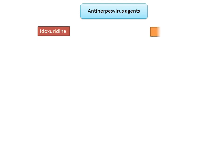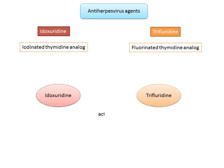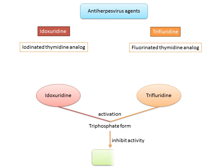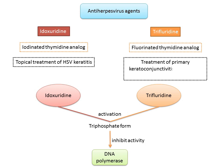Two other drugs are idoxuridine and trifluridine, both thymidine analogs — idoxuridine is the iodinated form and trifluridine is the fluorinated form. Upon activation, both are converted to their triphosphate form, which inhibits viral DNA synthesis and is incorporated into both viral and cellular DNA; such altered DNA is more susceptible to breakage and leads to faulty transcription. Idoxuridine is primarily used in HSV keratitis, whereas trifluridine is used for primary keratoconjunctivitis and recurrent epithelial keratitis.